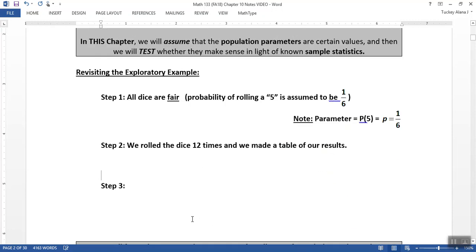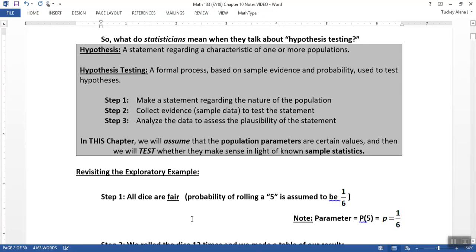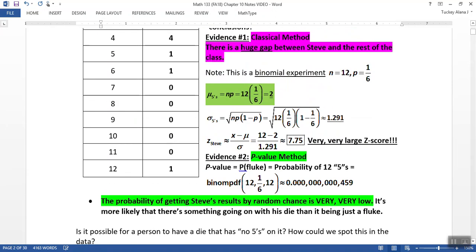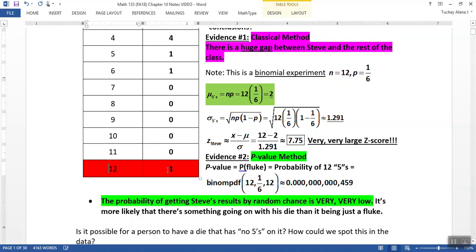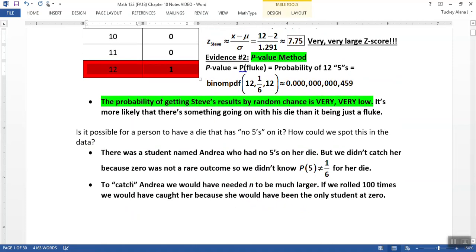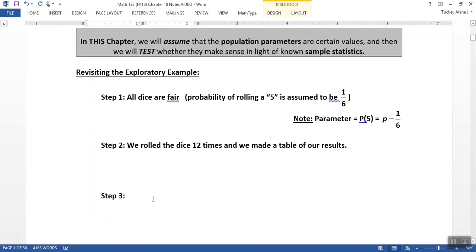But then what happens is they see Steve raise his hand at 12, right here, and everybody's hackles go up. They're like, wait a second, what's going on with him? Exactly. So that 12, that's unusual. That makes people go, what? So they're analyzing in their heads what's going on, and that's step three, the analysis.